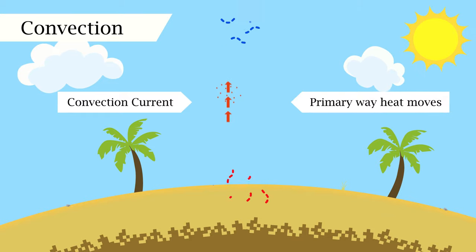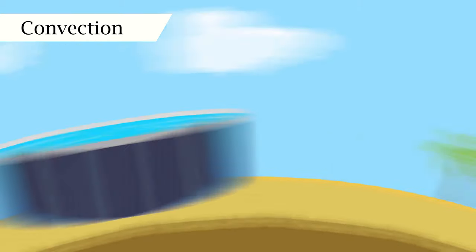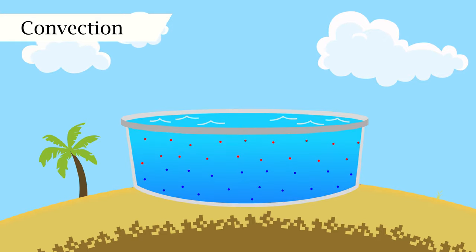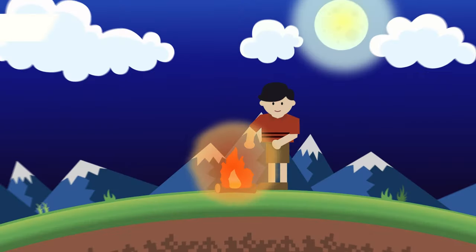This is the primary way heat moves through gases and liquids. Some examples include the warmer water on a pool surface, floating in a hot air balloon, and that cool evening breeze blowing through the lower floors of your house or apartment.